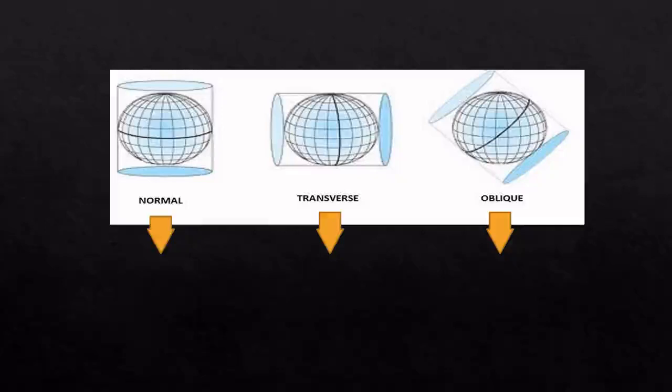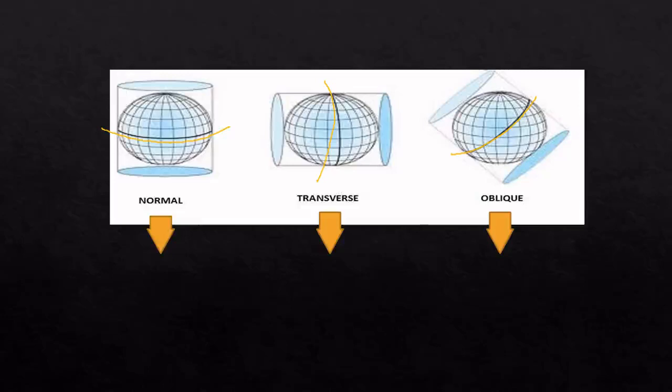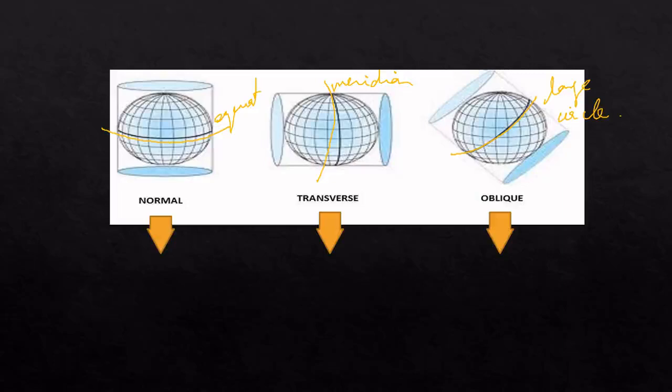Now, normal, transverse, and oblique orientations. You can see the equator, the meridian, and the great circle. When you are rotating about the normal axis, it is the equator. Transverse is along the meridian. An equator is also a great circle.